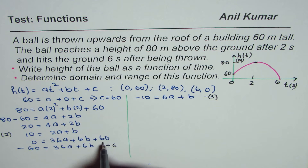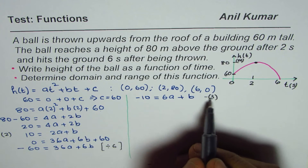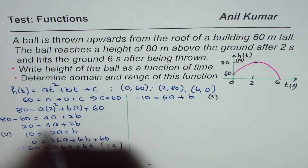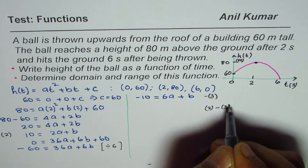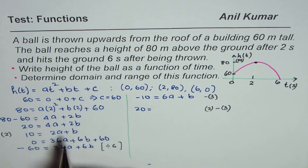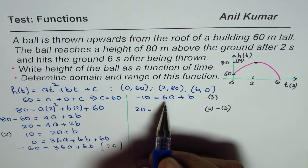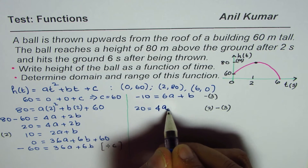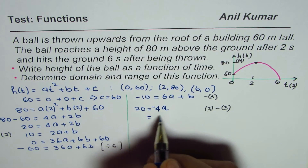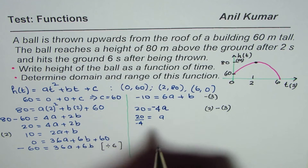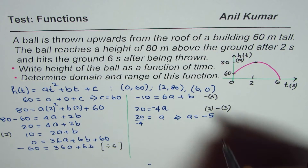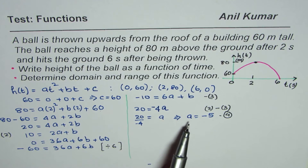From equation 2: 10 = 2a + b, and equation 3: −10 = 6a + b. Subtracting equation 3 from equation 2: 10 − (−10) = 20, and 2a − 6a = −4a, with the b terms cancelling. So 20 = −4a, giving us a = −5. Call this equation 4.